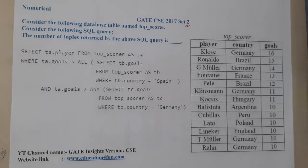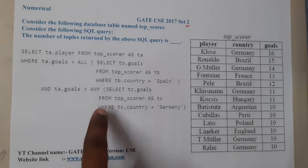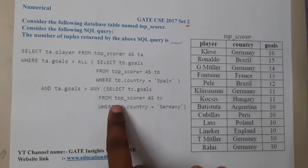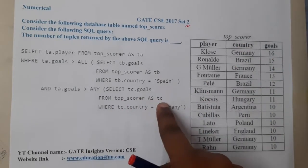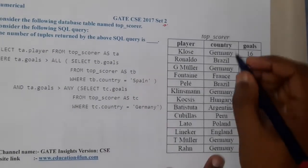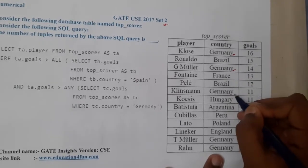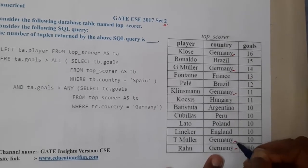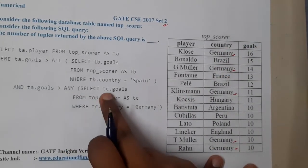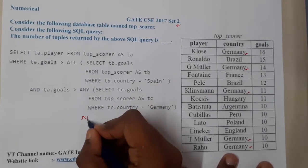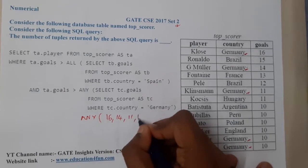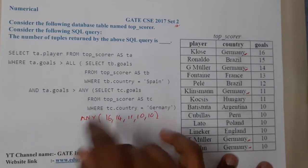The first inner query is: SELECT tc.goals FROM top_scorer AS tc WHERE tc.country = 'Germany'. So we are targeting only Germany. I found five Germany entries, and getting the goals values from them: 16, 14, 11, 10, and 10.